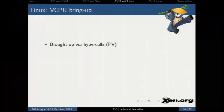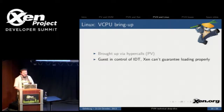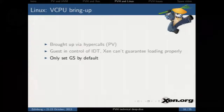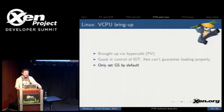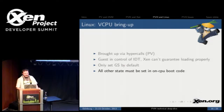The PVH VCPU bring-up: VCPUs are brought up via hypercalls, just like in the PV case — presumably because in the HVM case you have a local APIC and things like that which you can use to send bring-up messages. However, because the guest controls the IDT, a lot of the PV code for loading up the processor can't actually be guaranteed to work properly. So instead, we only set a handful of registers — the GS by default, and in the PVH case you only set the guest GS and a couple of other things like CS and EIP. The other state has to be set by the CPU as it's booting.